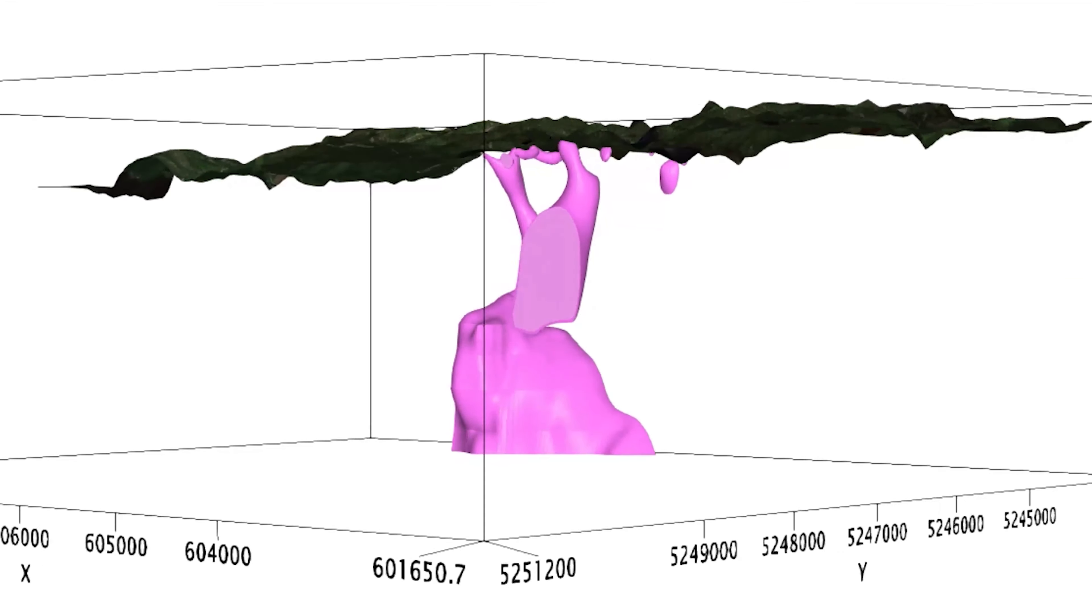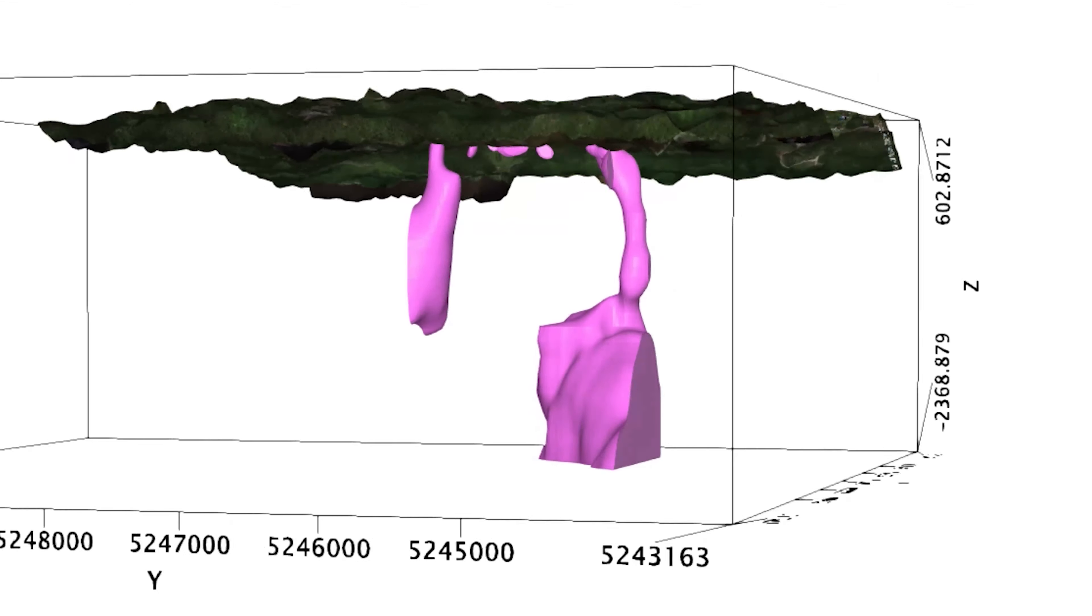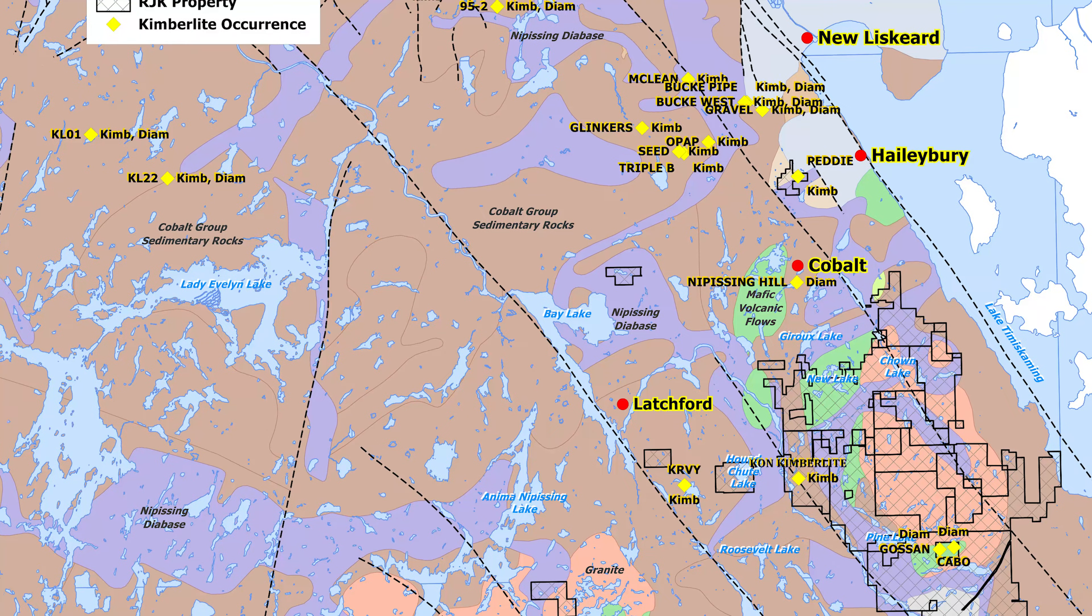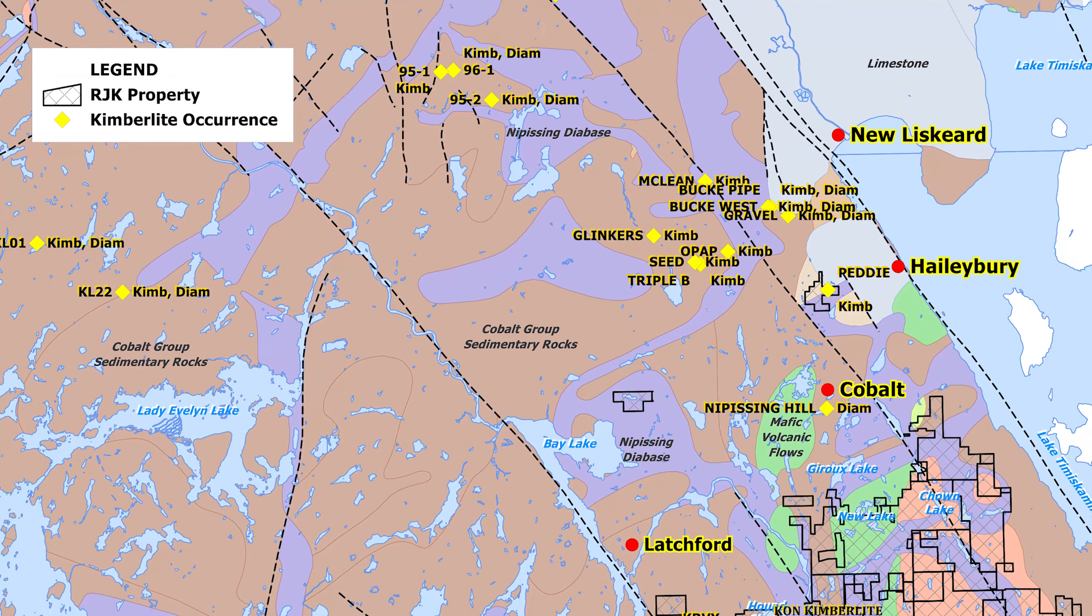We did some algorithm based on known kimberlite close to being economic. 95.2 is one of them. It's about 20 kilometers to the northwest of RGK and it's very close to being an economic pipe. You find another one like that, there's a diamond mine in Cobalt.